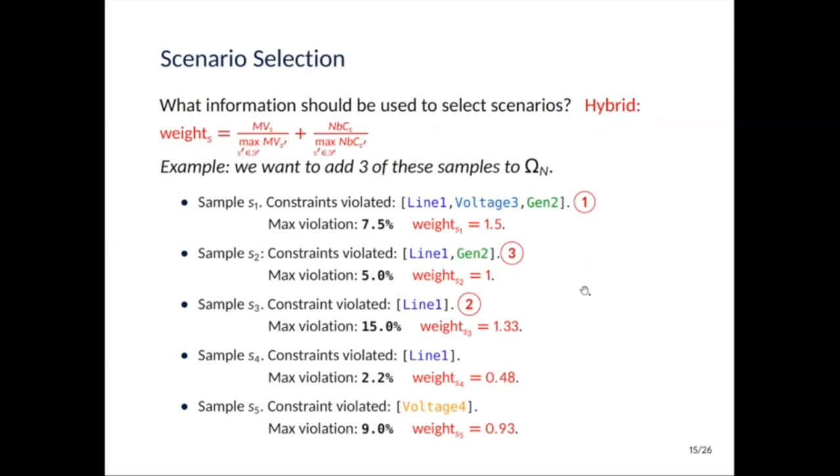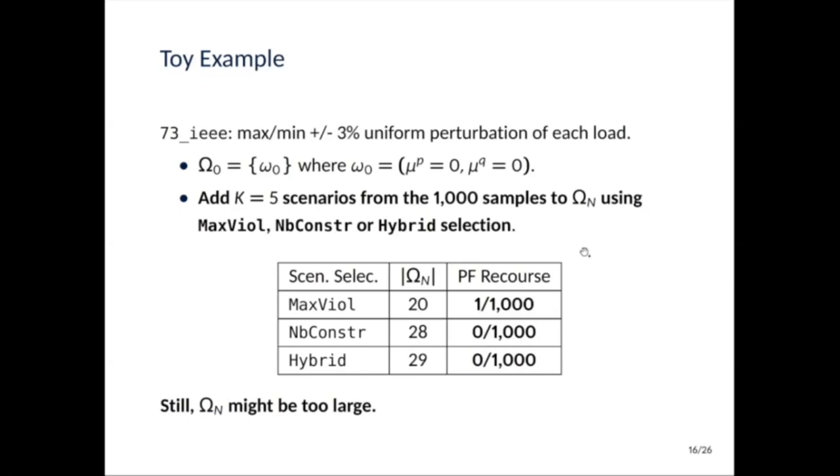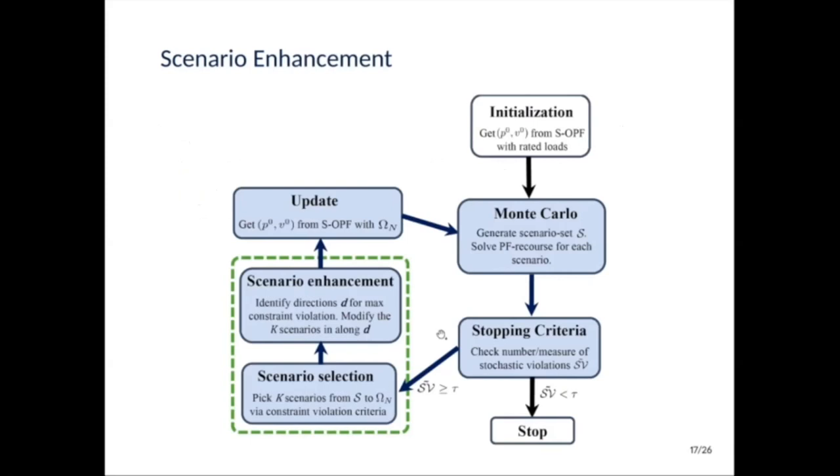So you basically just compute the weight. And in that case, you take sample S1, then S3, then S2. And we test the approach on the 73 bus test case. We want to add k equals 5 scenarios with the max violation, number of constraints, or hybrid selection. And now we managed to solve the problem basically because the infeasibility power flow recourse is almost zero. And the size of omega n, depending on the approach, will vary between 20 and 29 at the end of the algorithm. So still, for this test case, you might think that omega n is too large, and that's why we will need also to enhance the scenarios once you selected them.